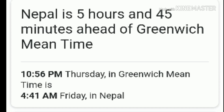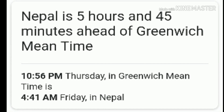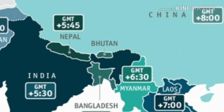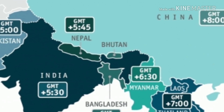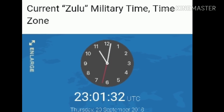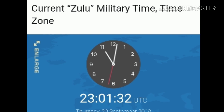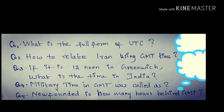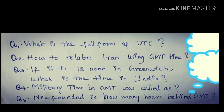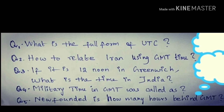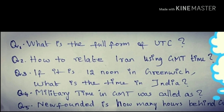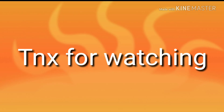Nepal is 5 hours 45 minutes ahead of GMT — a quarter-hour time zone. I hope you all understand. Thank you very much.